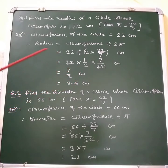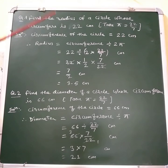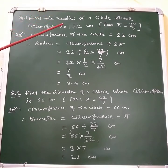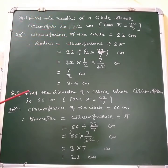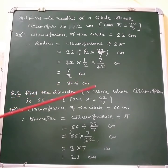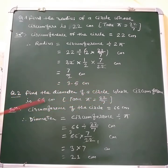Now 7 divided by 2 is 3.5 centimeters. In this way you can find out the radius of a circle if the circumference is given. Now question number 2: find the diameter of a circle whose circumference is 66 centimeters.